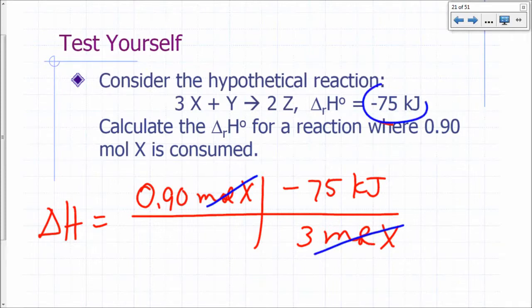It's really saying it's negative 75 for three moles of X, or you can say it's 25 kilojoules per mole of X.